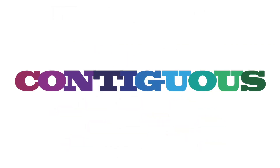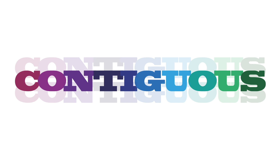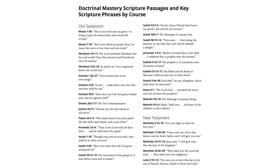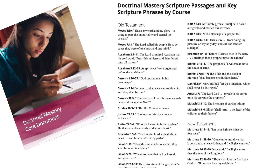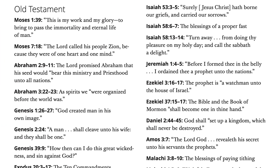Contiguous. Contiguous means next or together in sequence. Go ahead and pull out your doctrinal mastery passages and key scripture phrases section of your doctrinal mastery core document. These are the scripture phrases we really want students to know. As students look at these phrases, have them mark groups of, say, three words.